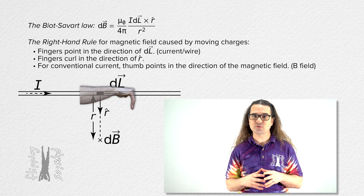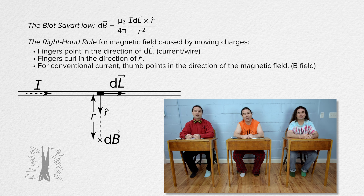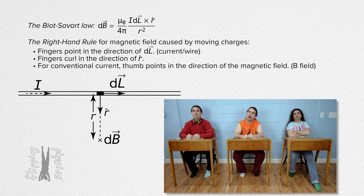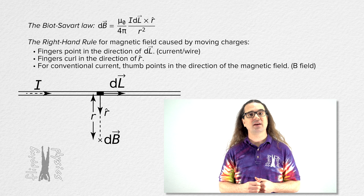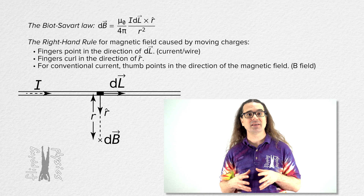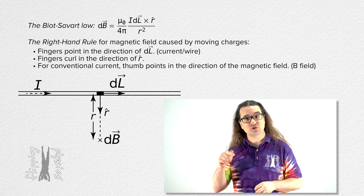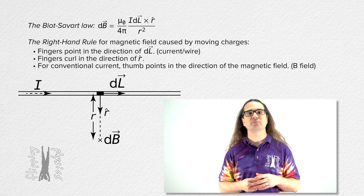The symbol we use for into the screen is an X. We can remember that because we can picture an arrow moving away from us, and the X represents the fletching of the arrow as it moves away from us. The Biot-Savart Law shows that a current-carrying wire creates a magnetic field, and for this small portion of the wire with current to the right, the magnetic field is into the screen at this location below the wire.